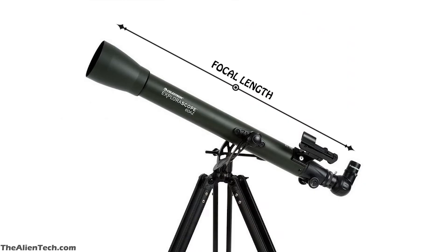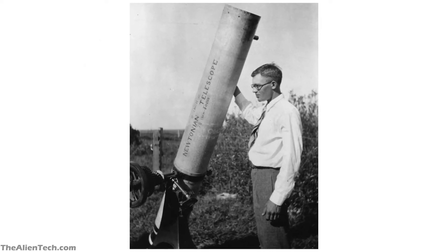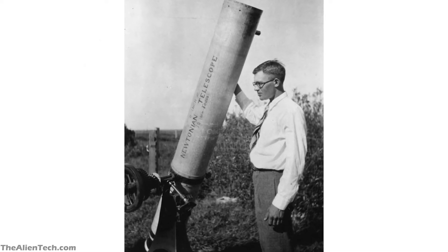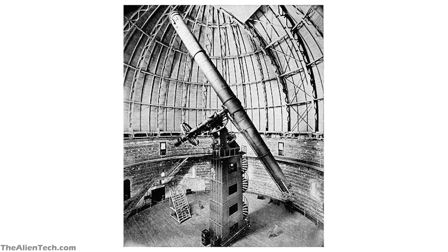If the focal length of a telescope is longer, then you can get maximum magnification with that telescope. When telescopes were invented, every single telescope was a refractor telescope. So to get more magnification, they built very long tube telescopes.